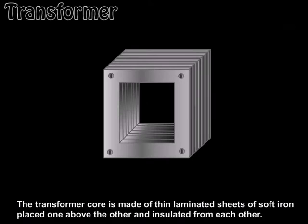The transformer core is made up of thin laminated sheets of soft iron placed one above the other and insulated from each other.